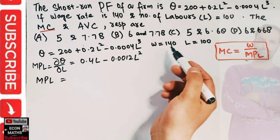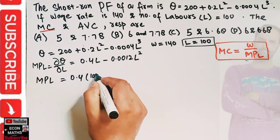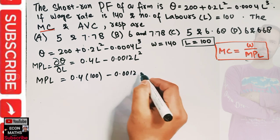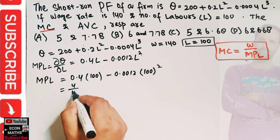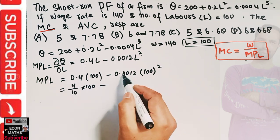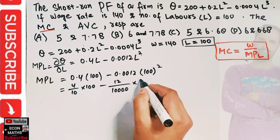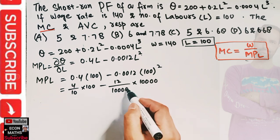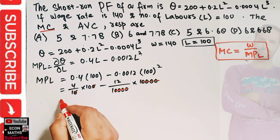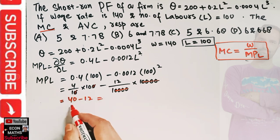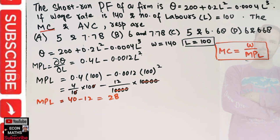Now we know the number of laborers is 100, so we plug L = 100 into the MPL formula: 0.4 × 100 minus 0.0012 × 100² = 40 minus 0.0012 × 10,000 = 40 minus 12 = 28. So the marginal product of labor is 28, meaning one laborer produces 28 units of output.